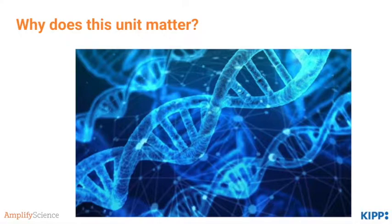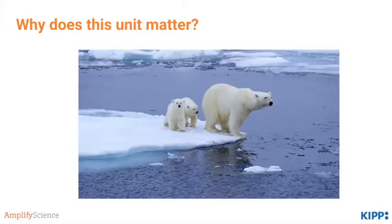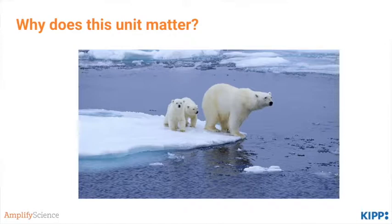Ultimately, students will understand the connection between traits, inheritance, and natural selection, which is what causes evolution. It's critically important our students understand this connection as they will be presiding over the largest mass extinction in 65 million years. It's our problem that we're passing on to future generations, and our students are going to need to understand the science behind it in order to solve issues like this.